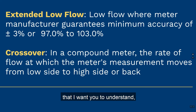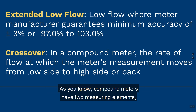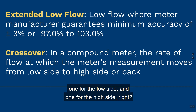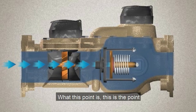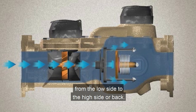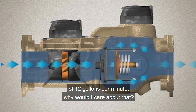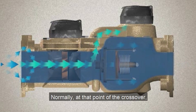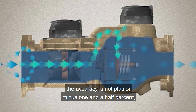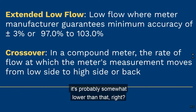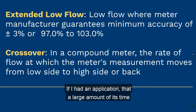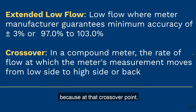The crossover point is another term to understand, and this has to do with compound meters. Compound meters have two measuring elements — one for the low side and one for the high side. The crossover point is where the meter's measurement transitions from the low side to the high side or back. At that crossover point, accuracy is not plus or minus one and a half percent — it's somewhat lower. If a large portion of an application's time is running near the crossover point, I might select a different meter because I won't have plus or minus one and a half percent accuracy there.